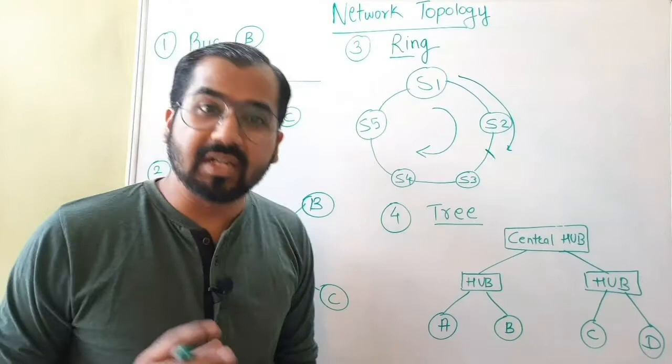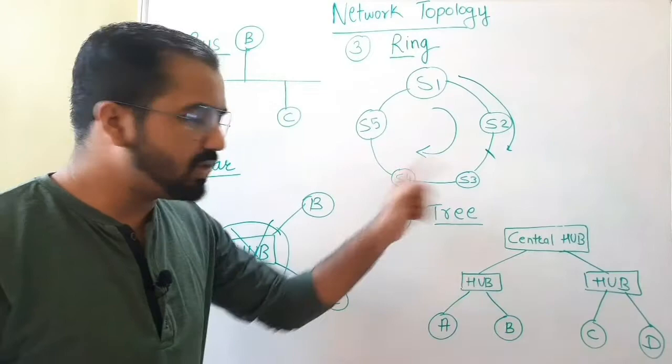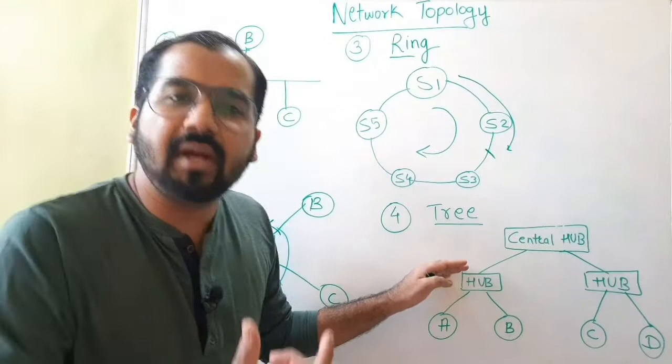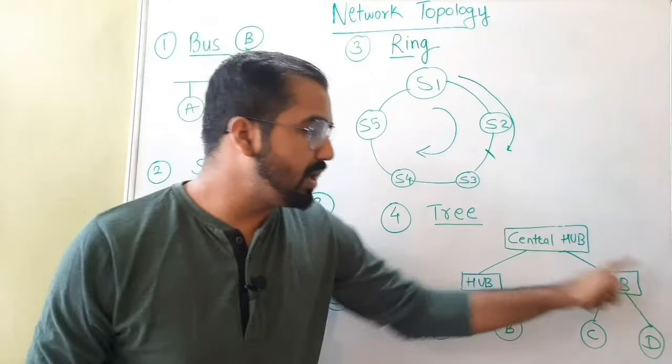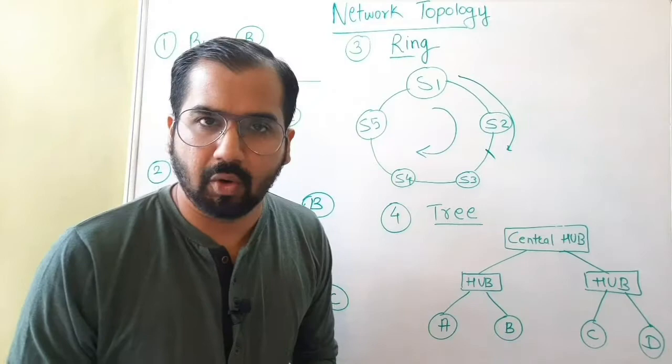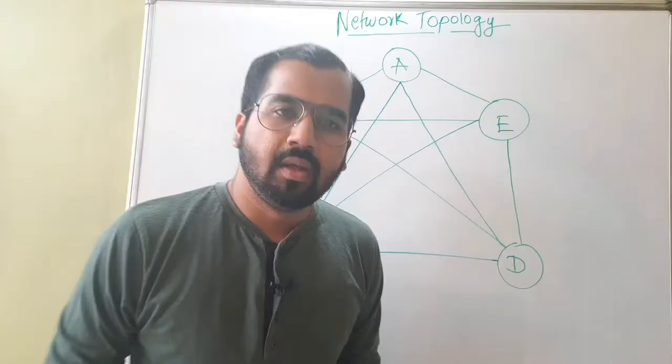One more disadvantage of tree topology is that it is very complex and difficult to install and configure. Tree topology is really very difficult and complex to set up. Additionally, whatever cables or links are used, they are going to cost you quite a lot — there is heavy cost involved for the bulky cables used in tree topology.